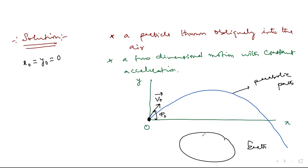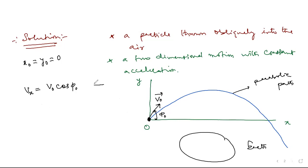Now we have equations of motion pertaining to the projectile. Since it is two-dimensional motion, we have two position equations — one for x and one for y — and two velocity equations. The first equation is: vx = v0 cos(phi0), where vx is the x-velocity at any time. The horizontal velocity component retains its initial value throughout the flight.